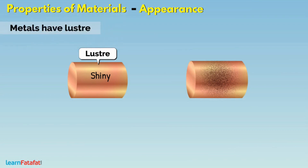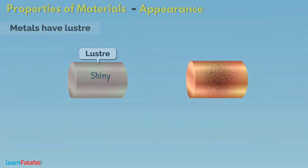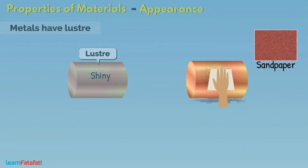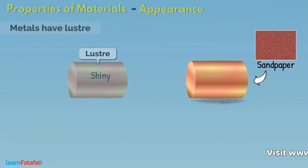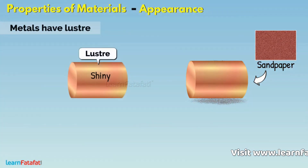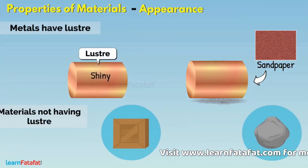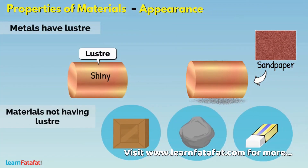If you don't see lustre on a metal, try to rub the metal with sandpaper. You will see the metallic lustre. Other materials do not have lustre.